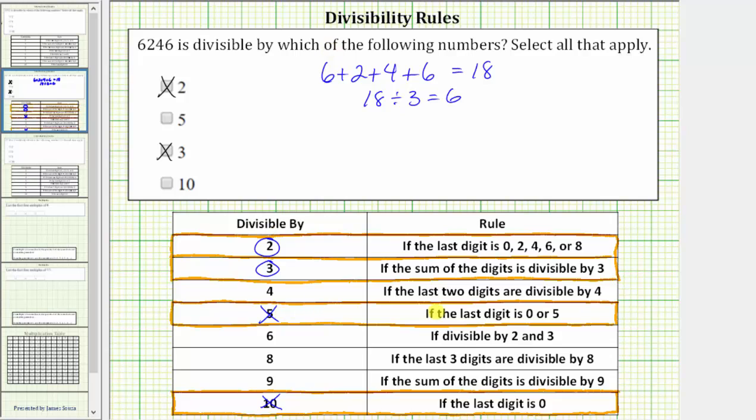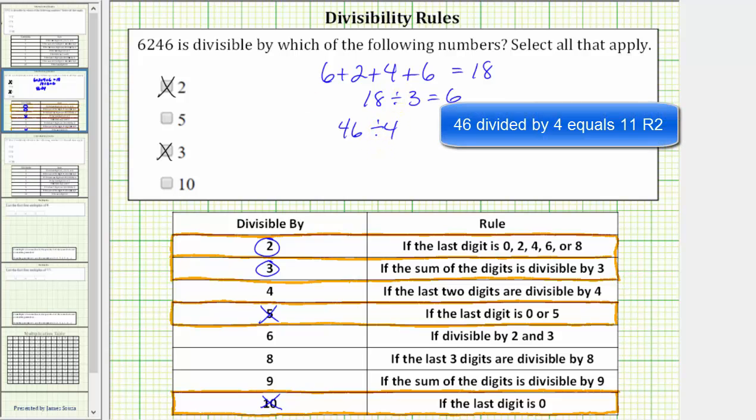The number is divisible by 4 if the last two digits are divisible by 4. The last two digits of 6,246 is 46. 46 is not divisible by 4 because if we try to divide by 4, there will be a remainder. So we cross off 4.